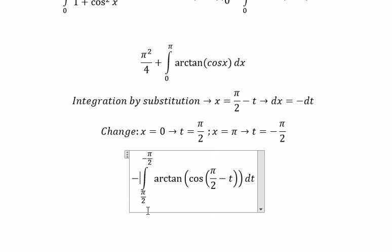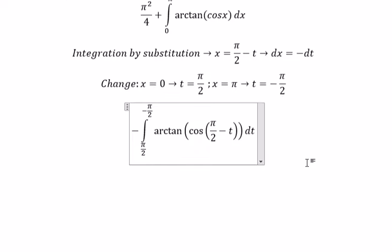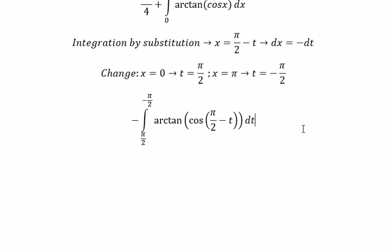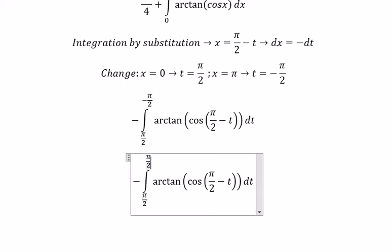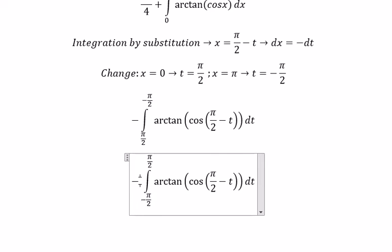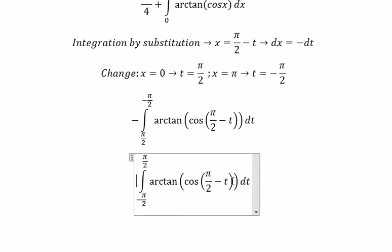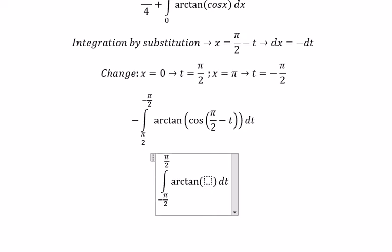Because this bound is smaller than this one, we can swap the top and the bottom together. So this one we can change to sin t.